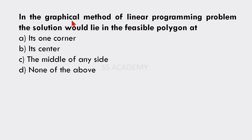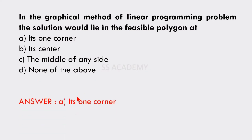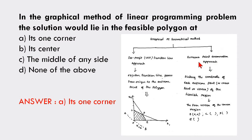Next question: In the graphical method of linear programming problems, the solution would lie in the feasible polygon at — its one corner, its center, the middle of any side, or none of the above? The answer is option A: its one corner. This falls under the extreme point enumeration approach, where we find the coordinates of each extreme point (corner or vertex) of the feasible region, then find the optimum solution from those vertex points.